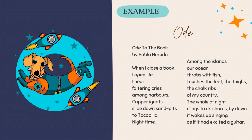This is Pablo Neruda's Ode to the Book: 'When I close a book, I open life. I hear faltering cries among harbors. Copper ingots slide down sand pits to Takapia. Nighttime among the islands. Our ocean throbs with fish, touches the feet, the thighs, the chalk ribs of my country. The whole of night clings to its shores by dawn. It wakes up singing as if it had excited a guitar.' So no particular rhyme scheme, no particular stanza length or line length. The main thing with the ode is there's an object or a person that is being praised.